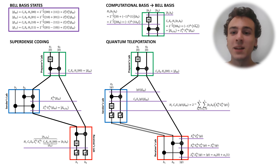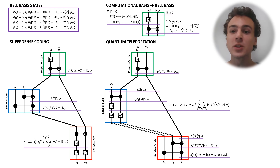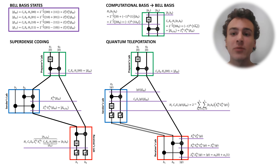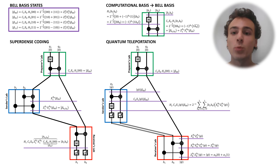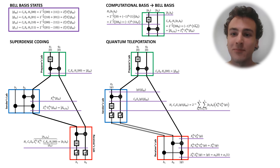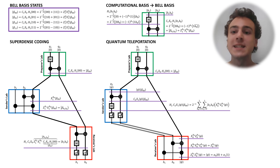Let's elucidate quantum teleportation. In this video, we're going to explore visualizations of superdense coding and quantum teleportation. In these visualizations, time flows from top to bottom. Black solid lines represent qubits, and black double lines represent classical bits. Check out the description to see where you can download the diagrams shown in this video.